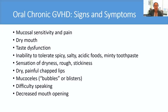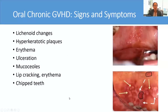Patients presenting with oral chronic GVHD will complain of sensitivity and pain, dry mouth, changes in taste. Particularly, they can complain of inability to eat spicy, salty, or acidic foods, and sometimes carbonated beverages, as these tend to burn the mucosa. They can also complain of sensation of dryness, stickiness or roughness in their mouth, and they can report bubbles or blisters in their mouth that can pop. Those with perioral GVHD can complain of dry, painful chapped lips, and those with sclerosis can have restricted mouth opening. On exam, patients will present with lichenoid changes, hyperkeratotic plaques, erythema and ulceration, as well as mucosils, lip cracking, and erythema of the lips. They oftentimes can have poor dentition with chipped teeth and a lot of dental caries.